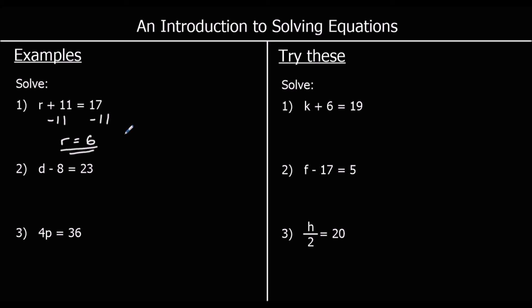For the second one, we've got D minus 8 equals 23. The opposite of taking away 8 is adding 8. So if I add 8 to both sides, I get D equals 23 plus 8, which is 31. And question 3. 4P equals 36. 4P means 4 times P. The opposite of multiplying by 4 is dividing by 4. So P equals 36 over 4, which is 9.